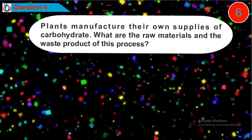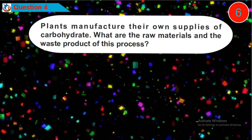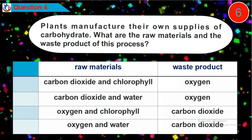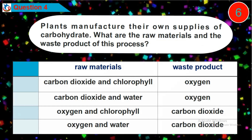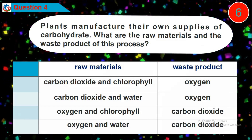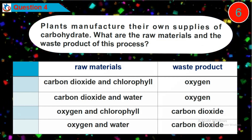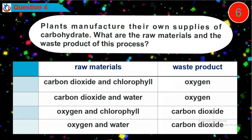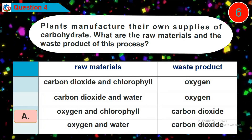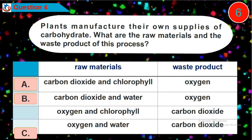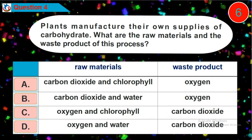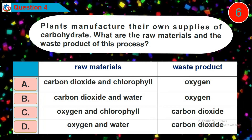Question four: plants manufacture their own supplies of carbohydrates. What are the raw materials and the waste product of this process? Is it option A, B, C, or D?